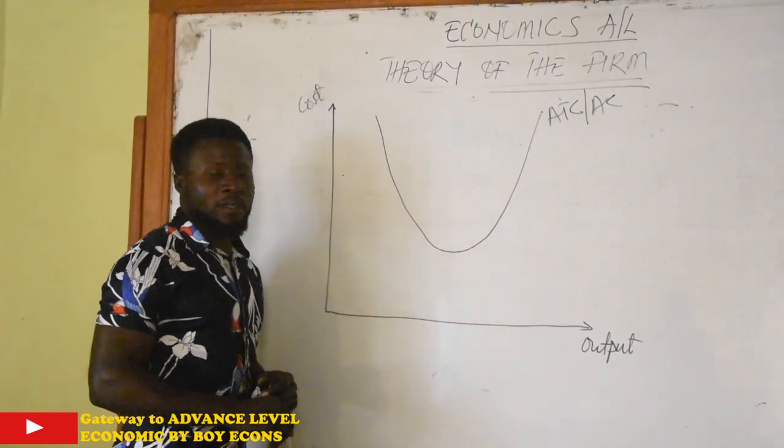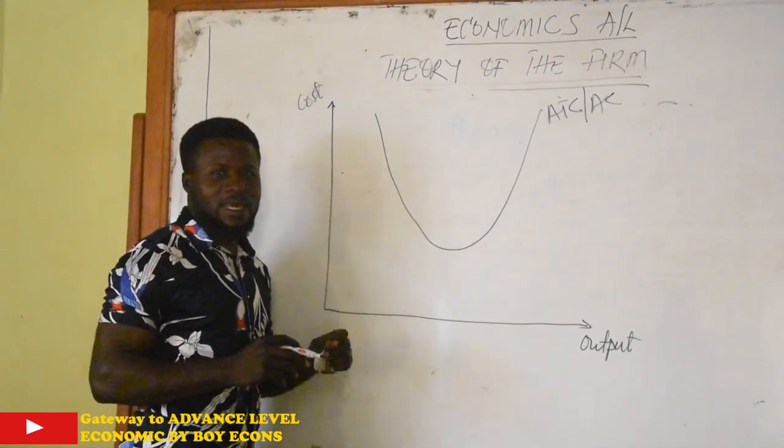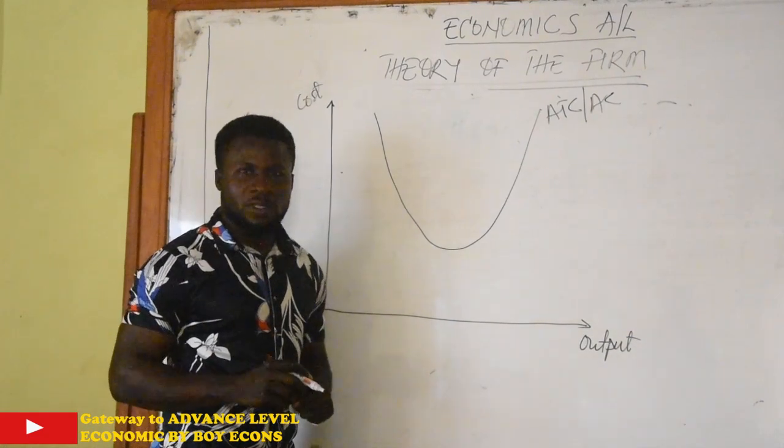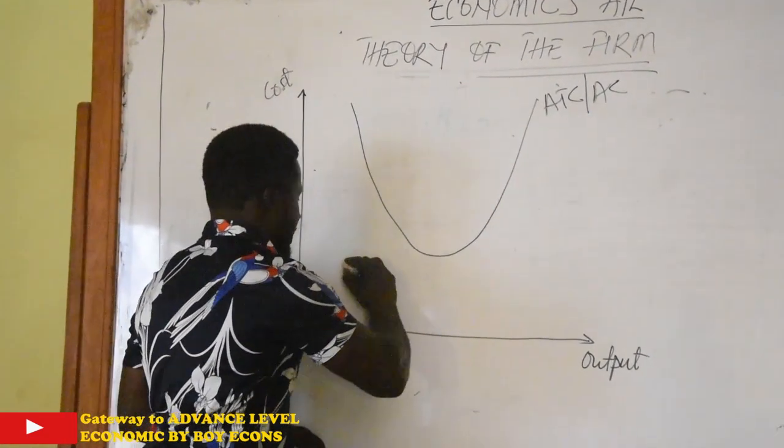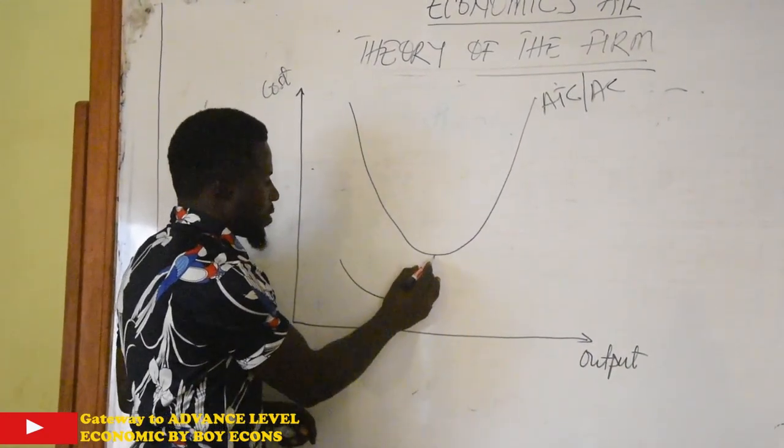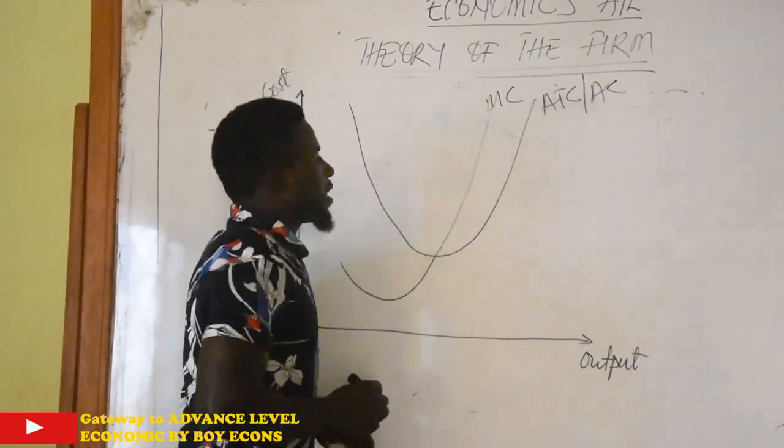And then the marginal cost curve always begins from below the average total cost curve and it cuts across the average total cost curve at its lowest point, which we call the technical optimal output. This is the lowest point of average total cost and marginal cost crosses that point. This is our marginal cost.